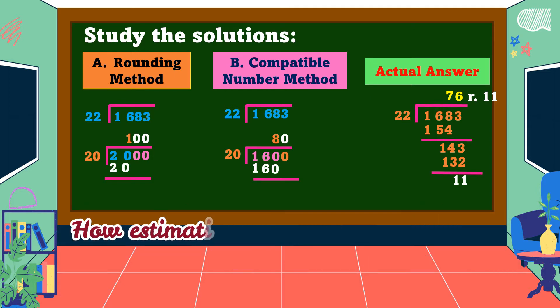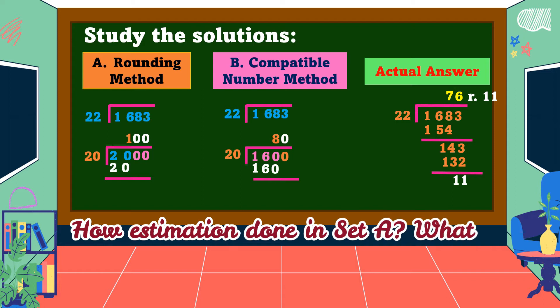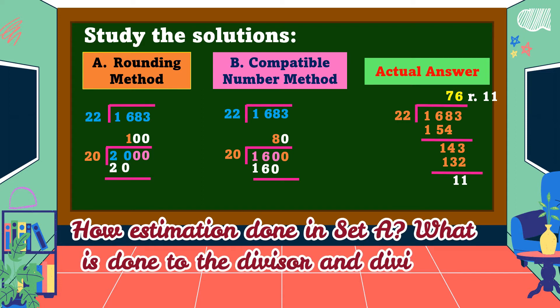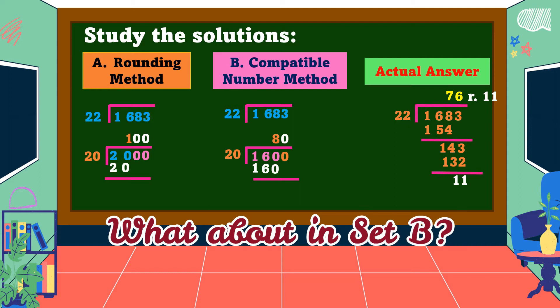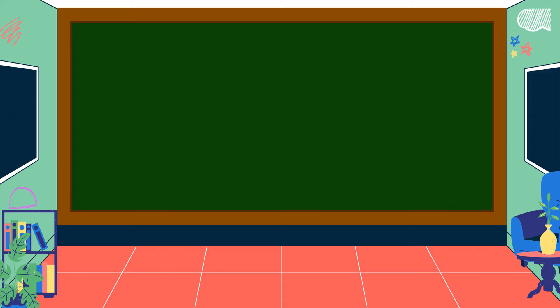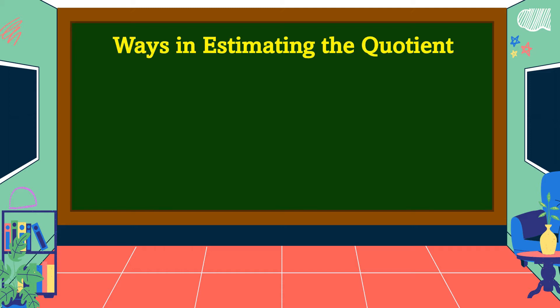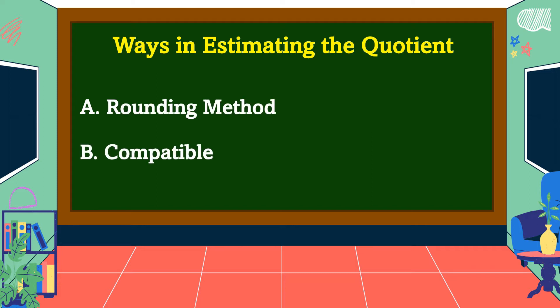How is estimation done in Set A? What is done to the divisor and dividend? What about in Set B? To understand further our lesson for today, let's study the two ways of estimating the quotient: the first one is by rounding method, and the second one is by compatible number method.